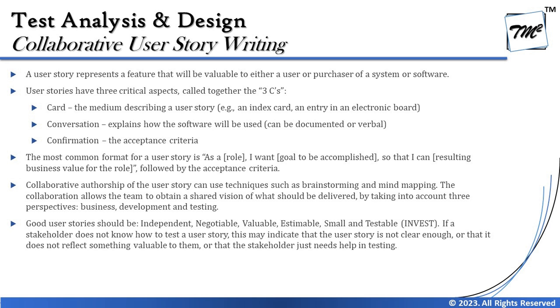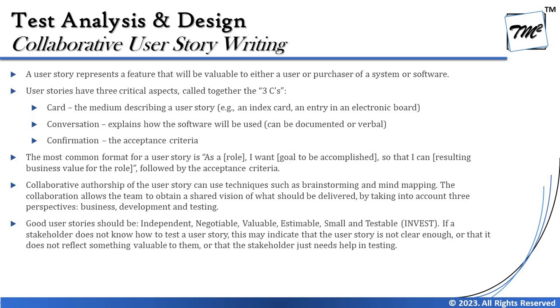The second C is Conversation, which explains how the software will be used — a description of that particular story detailing how we are trying to achieve things and what the exact business expectation is. The third important thing is Confirmation, which is a clear acceptance criteria. Every single story should have visibility within the team, represented by a Card — a physical or digital card available that talks about a particular work item.